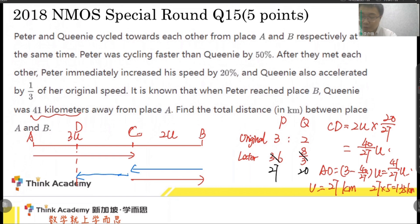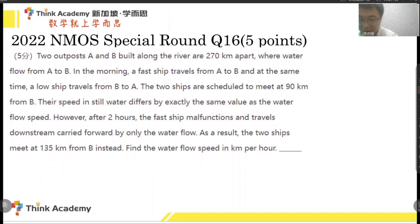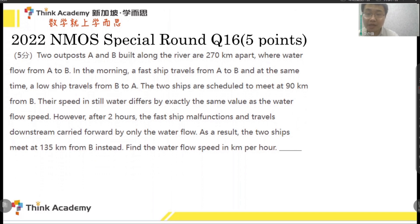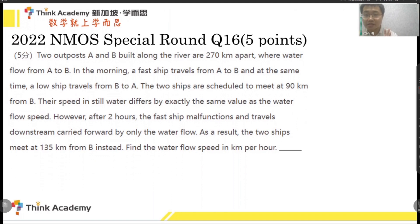That was the easier question. The more difficult one is from 2022 — perhaps the most difficult distance word problem in recent years. This question is about water and boats. The speed of a boat is influenced by the speed of the current. If a ship travels downstream, its actual speed is the speed in still water plus the speed of flow. If traveling upstream, its actual speed is its speed in still water minus the speed of flow.